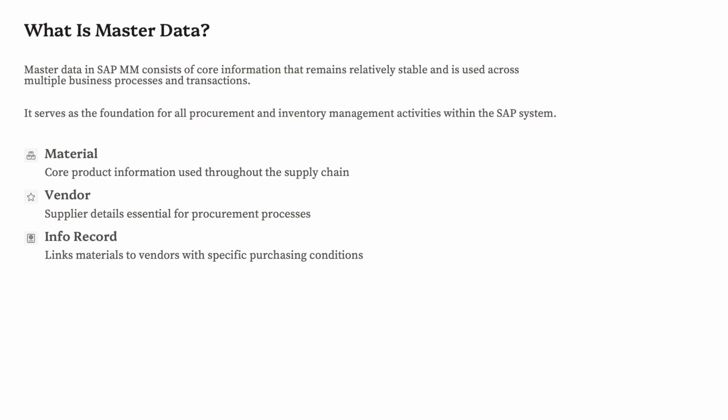In SAP MM, master data includes information about materials — products, goods, raw materials, packaging, etc. — as well as vendors, suppliers, and business partners, and relationships between materials and vendors via Info Records. This data is required for procurement, inventory management, valuation, and reporting.